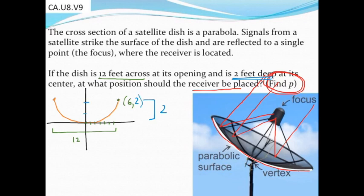I know one point of my parabola—actually two points, because I placed the vertex at (0,0)—but more importantly, I know this point right here is at (6,2). Using that information, I can find where the p-value should be, where I should place the receiver.